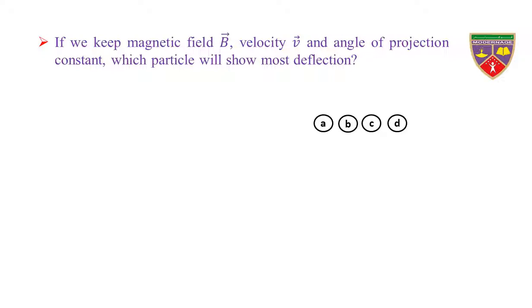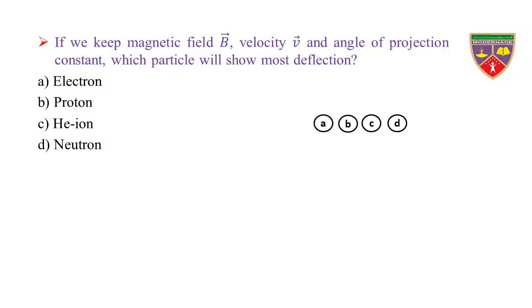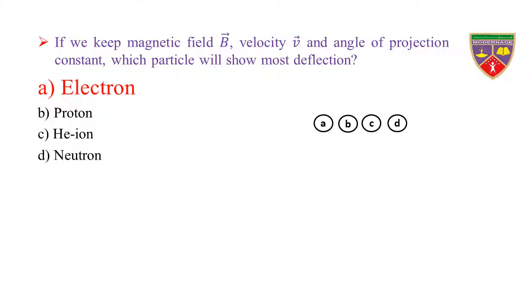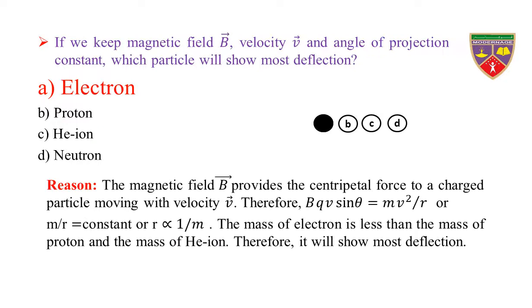If we keep magnetic field B, velocity V, and angle of projection constant, which particle will show most deflection? Option A: electron. Option B: proton. Option C: helium ion. Option D: neutron. The key is electron. Therefore, the correct option is A.